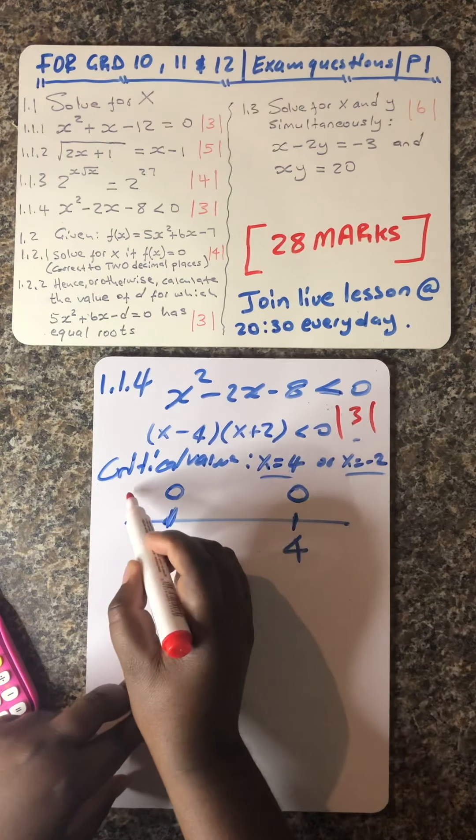So let's try with a number between the two critical values. You can substitute negative 1, 0, 1, 2, or 3 — those are numbers between the two critical values. I'll substitute 3. When I substitute 3, I'm getting a negative number. I'm not interested in the actual number; I just want to know the sign. When I punch a number which is between negative 2 and 4, I get a negative answer.